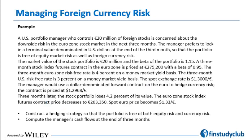Third example: A U.S. portfolio manager controls 20 million euro invested in the eurozone stock market. The domestic currency is dollar while investments are 20 million euro in euro stock markets. The manager prefers to lock in a terminal value denominated in U.S. dollars. There is both equity risk and currency risk to manage. The portfolio manager wants to hedge against equity market risk as well as foreign currency risk.